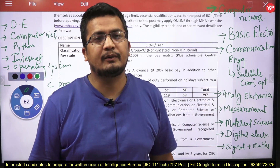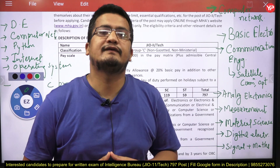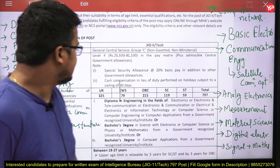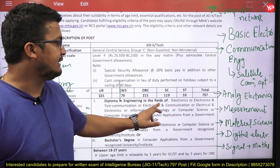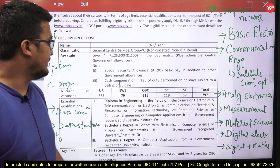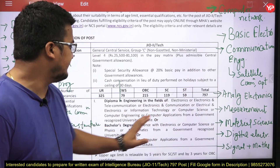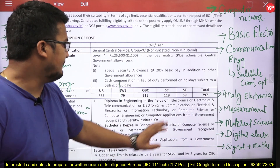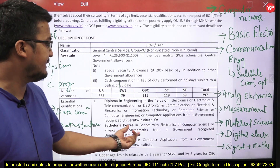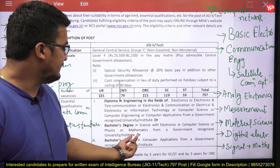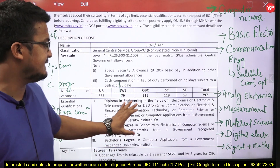Before proceeding ahead with the syllabus and exam structure, let's read the eligibility first. The essential qualifications mentioned are: diploma in engineering in electronics, electronics telecommunication, electronics communication, electrical, or information technology or computer science or computer application; and bachelor's degree in science with electronics, computer science, physics, or mathematics; or B.Tech degree in computer science from a government recognized university.